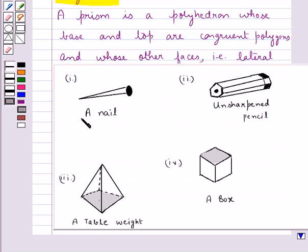The first figure is of a nail. This figure does not satisfy the conditions of a prism. The base and the top of this figure are not congruent polygons and the other faces are not parallelograms in shape. Therefore, the figure one, that is of a nail, is not a prism.